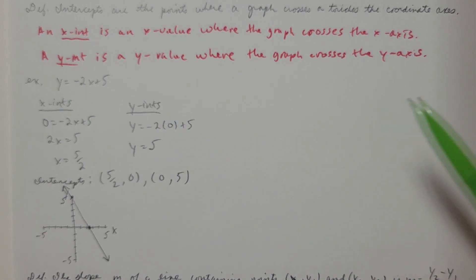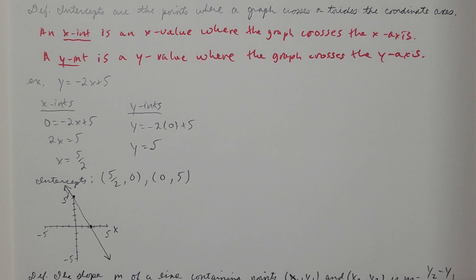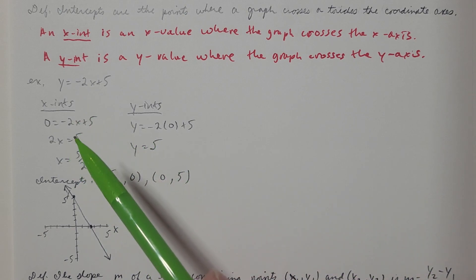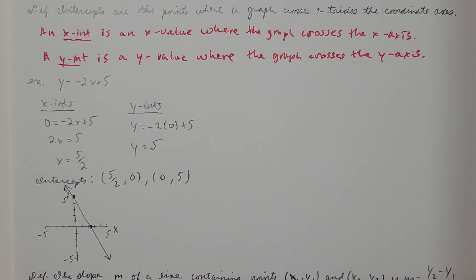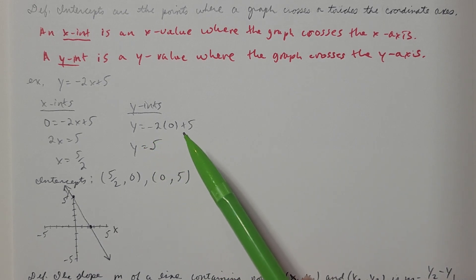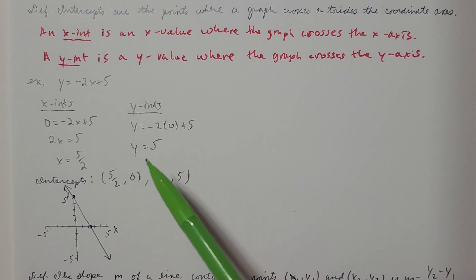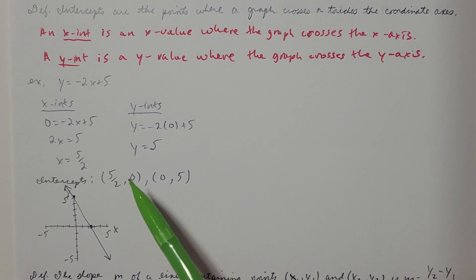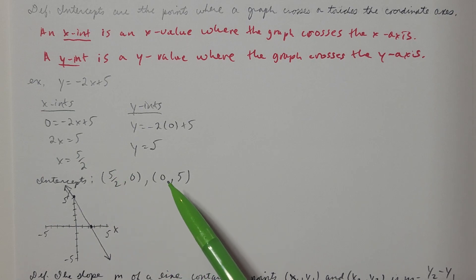To find a y-intercept I need to let x be 0 and solve for y. So whatever kind of intercept you're wanting to find, let the other variable be 0 and solve. To get the x-intercept I let y be 0: 0 equals negative 2x plus 5. Adding 2x and dividing by 2, x equals 5/2. For the y-intercept, letting x be 0, y equals 5. So the two intercepts are the points (5/2, 0) and (0, 5).